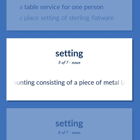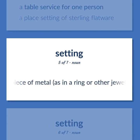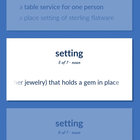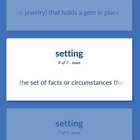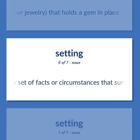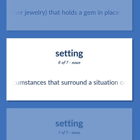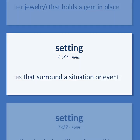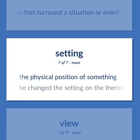Setting: A mounting consisting of a piece of metal, as in a ring or other jewelry, that holds a gem in place. The set of facts or circumstances that surround a situation or event. The physical position of something. He changed the setting on the thermostat.